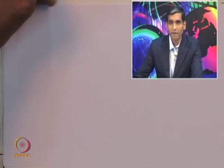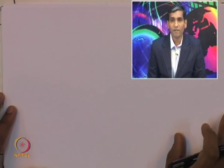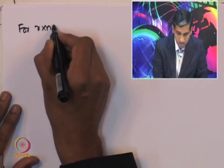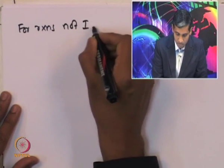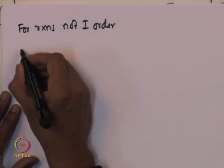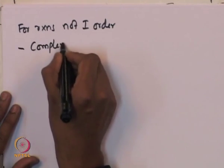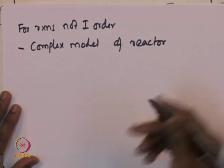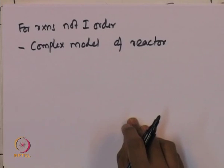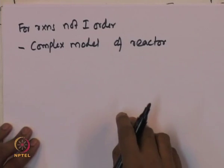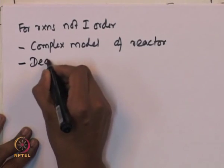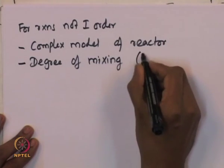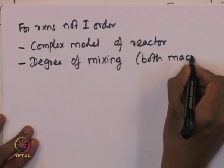For reactions which are not first order, what is required is actually a complex model of the reactor. Complex model of the reactor is required to predict the conversion of the species undergoing the reaction. In addition, the degree of mixing — both macro and micro mixing information — is required.